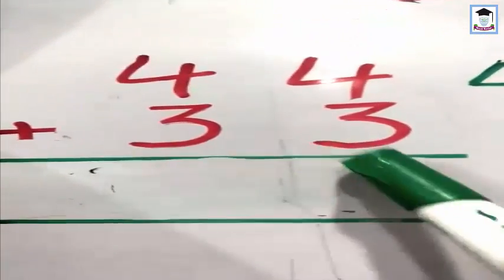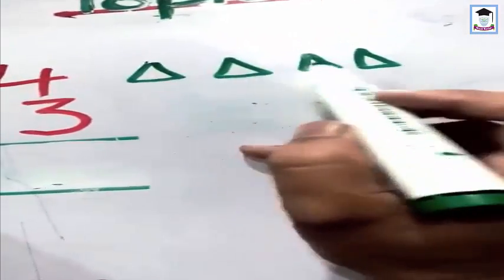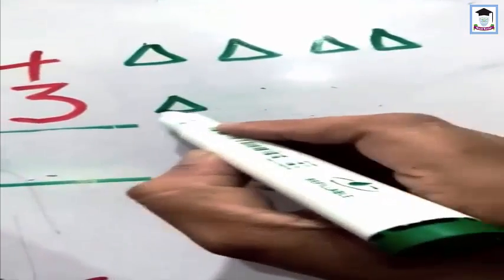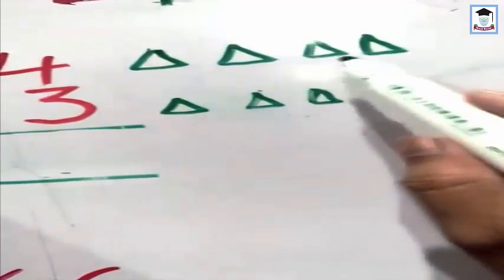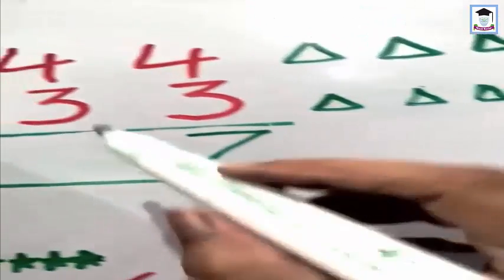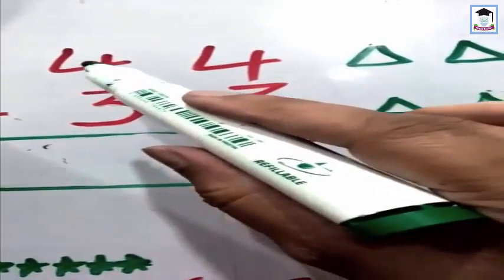First of all, we have 44 plus 33. This sign is plus. We will start on the right side: 4 plus 3. There are four triangles — one, two, three, four. We will add three more — one, two, three. Now we will count how many triangles: one, two, three, four, five, six, seven. There are seven triangles. Four plus three makes seven.